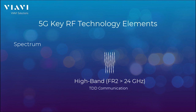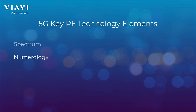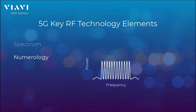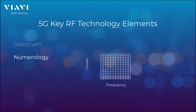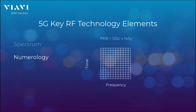The second technology element is numerology, where a signal is transmitted in frequency but also in time, creating a physical resource block. That resource block is composed of 12 subcarriers in frequency by 14 symbols in time — those are the resource elements transmitting all the data.